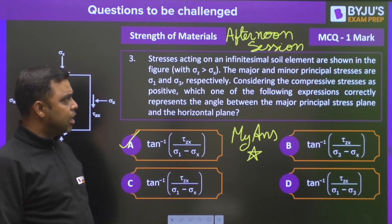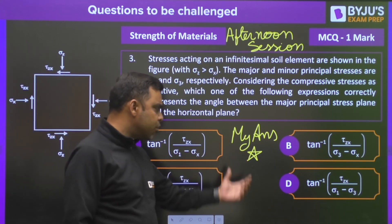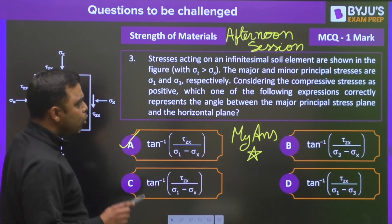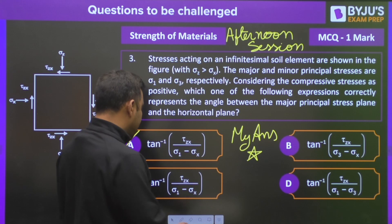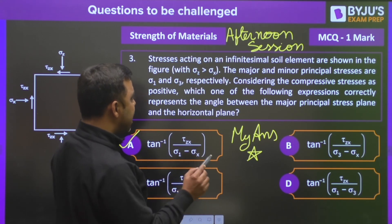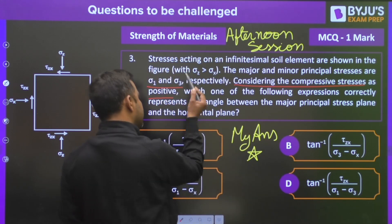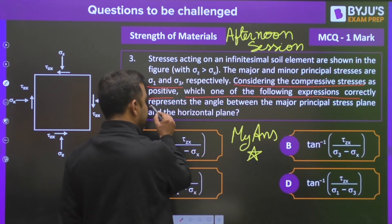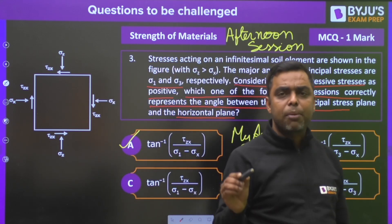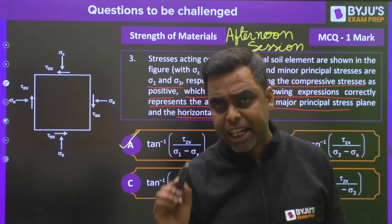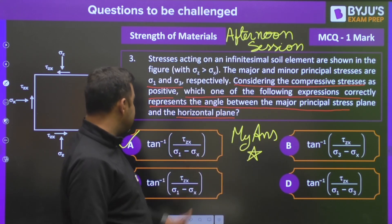The next question is from the afternoon session and belongs to Strength of Materials. GATE has given the answer as option A, but according to me the answer should be 'star' — meaning no correct option exists. The question asks: given major and minor principal stresses σ1 and σ3, considering compressive stresses as positive, which expression correctly represents the angle between the major principal stress plane and the horizontal plane?